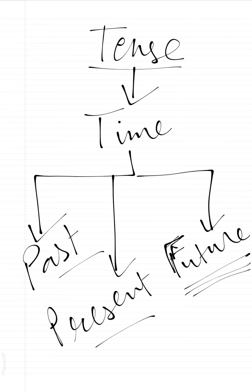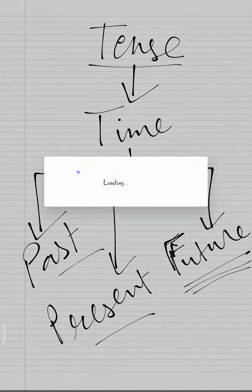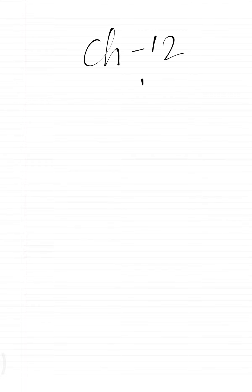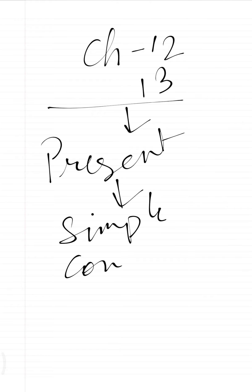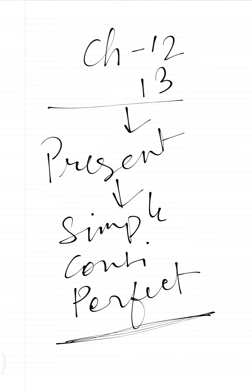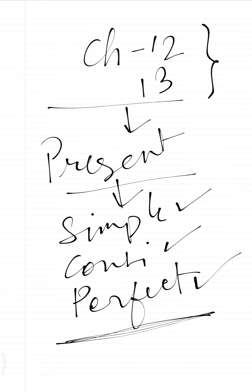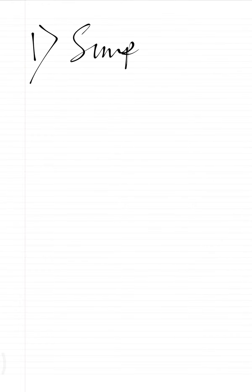These are the three divisions of time — past, present, and future. In this video we are going to cover chapter number 12 and 13. Here we will see the present tense, and under present we will see the simple present tense, present continuous tense, and the present perfect tense. We will complete these three topics under present tense.